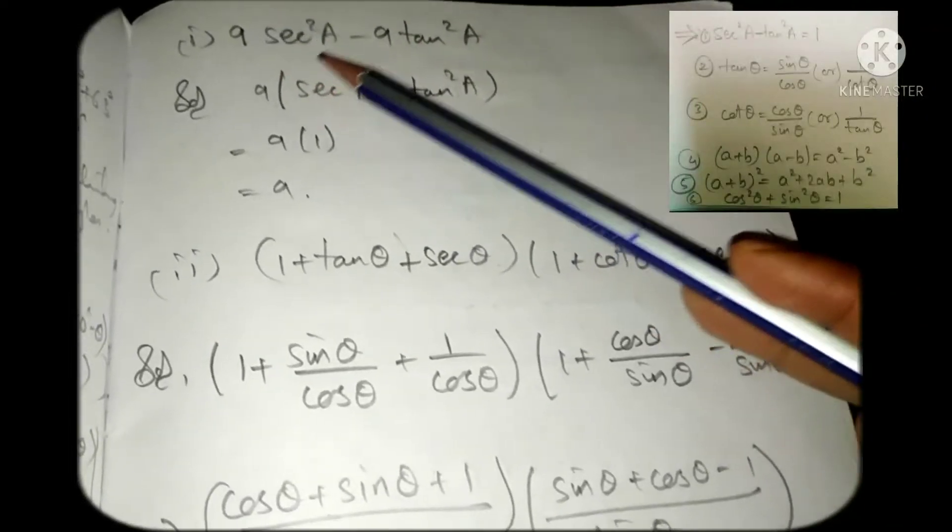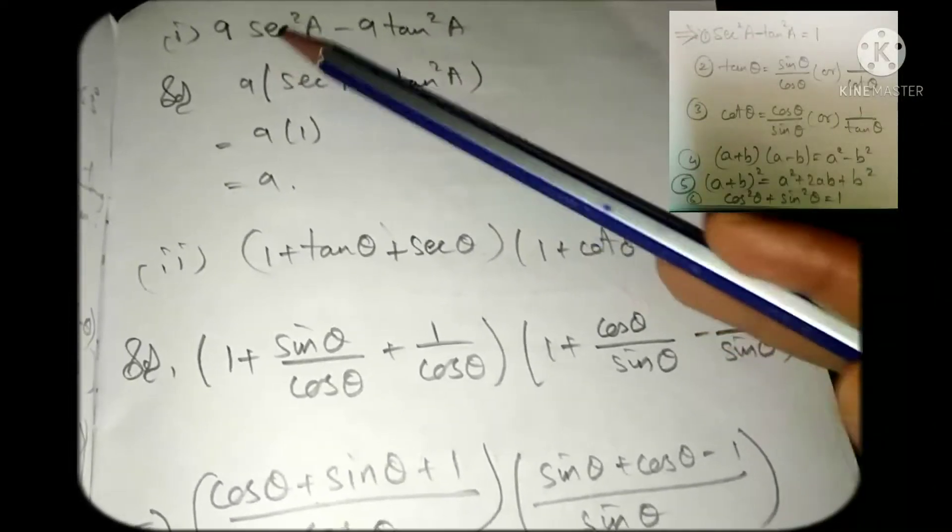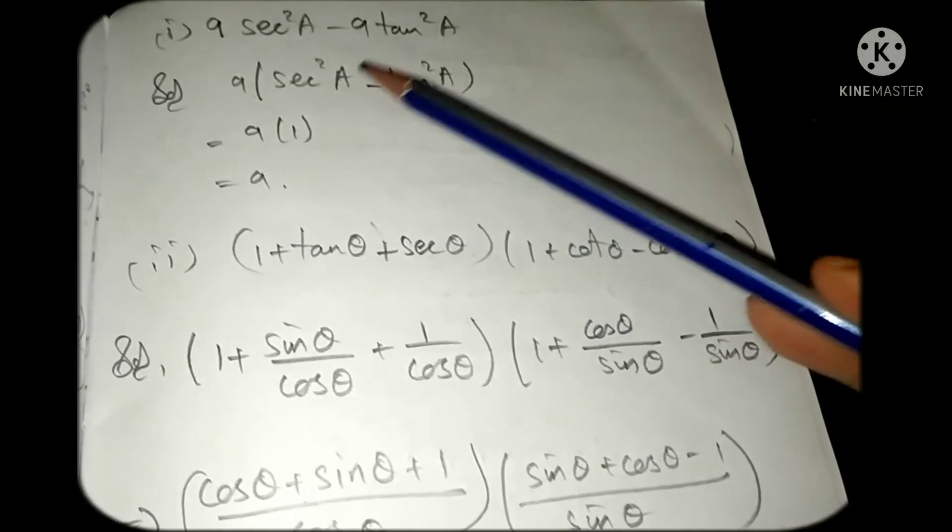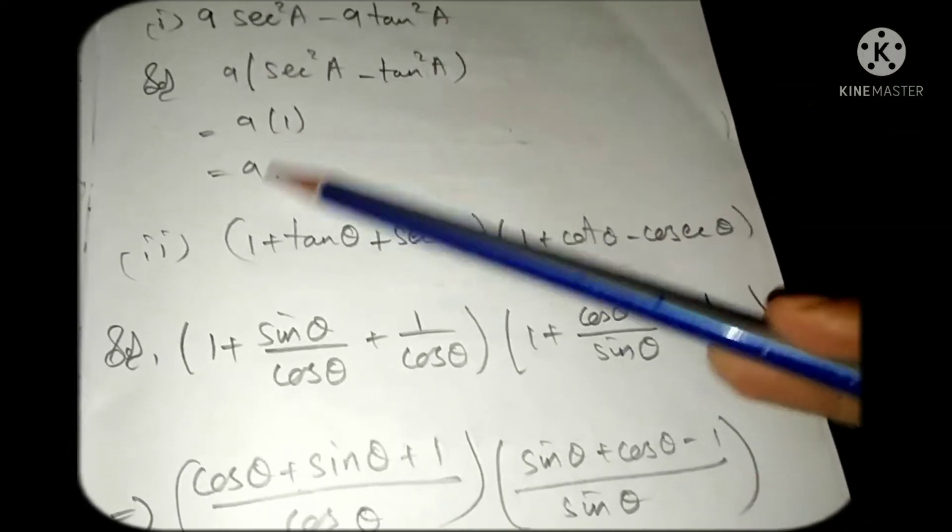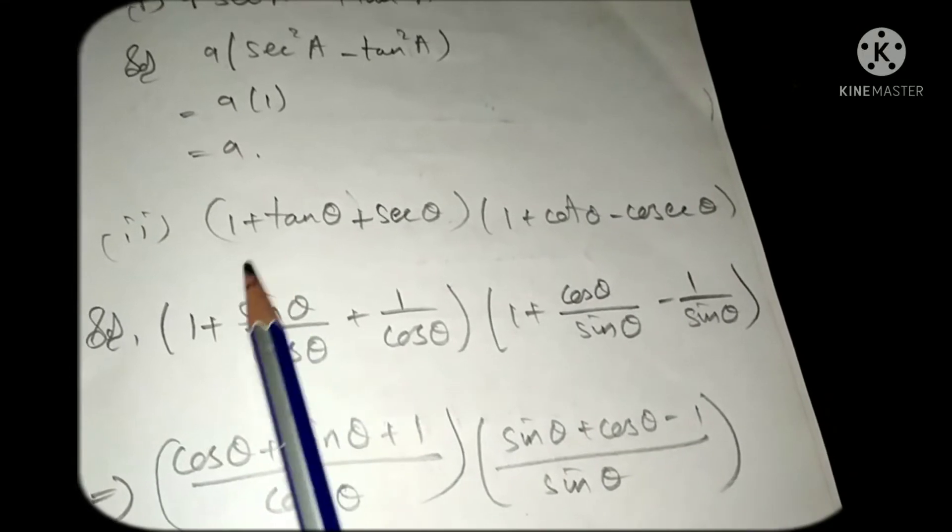Here the question is 9 secant square a minus 9 tan square a. Here we can take 9 common. Now we have secant square a minus tan square a. We know that identity, we can put 1 in the place of that.